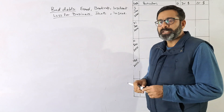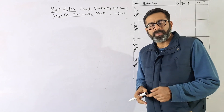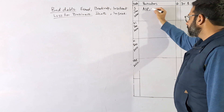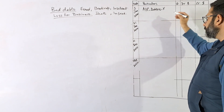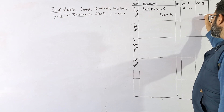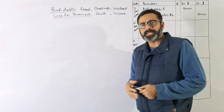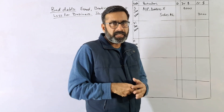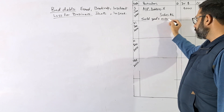We have two methods here. The first option is the direct write-off. Writing off bad debt means you expected to receive money from the customer but are unable to, so you write it off. For example, there is an account receivable — let's say Mr. X is the debtor. You sold goods to Mr. X, the debtor is debited and the sale account is credited for three thousand dollars.